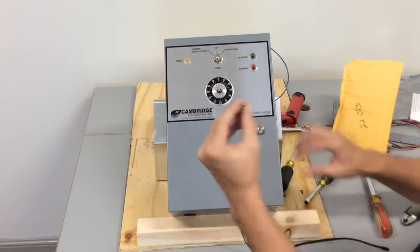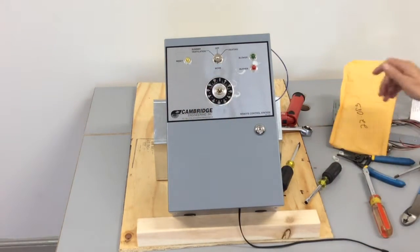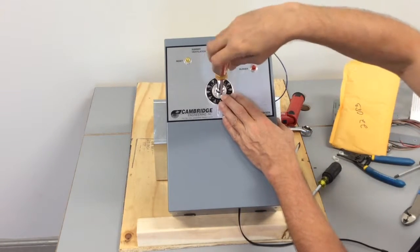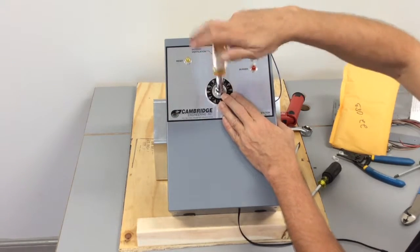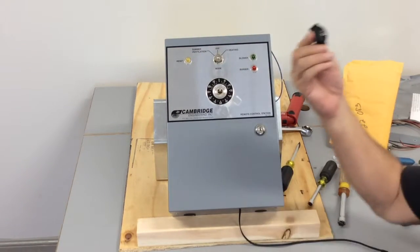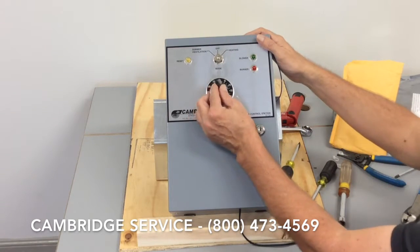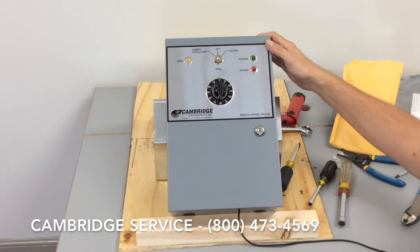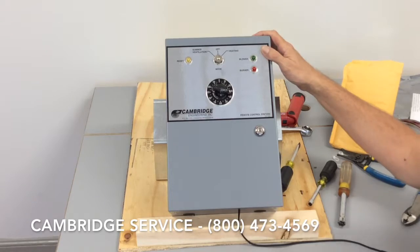And this is where your 5-eighths driver comes in. Simply snug that down lightly. It is plastic so we don't want to strip the threads. Now we can go ahead and install the included knob. Just slides right on there. And now we're able to set our timer and turn our timer off.